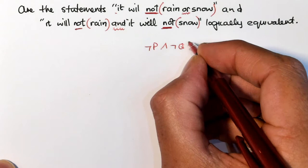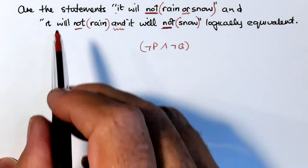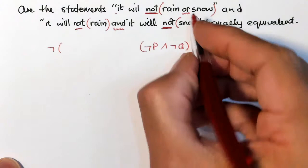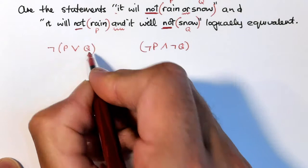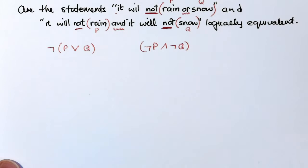The one argument. The other one, it will not rain or snow. Now I'm not introducing my symbols properly. So we call P rain and Q snow.